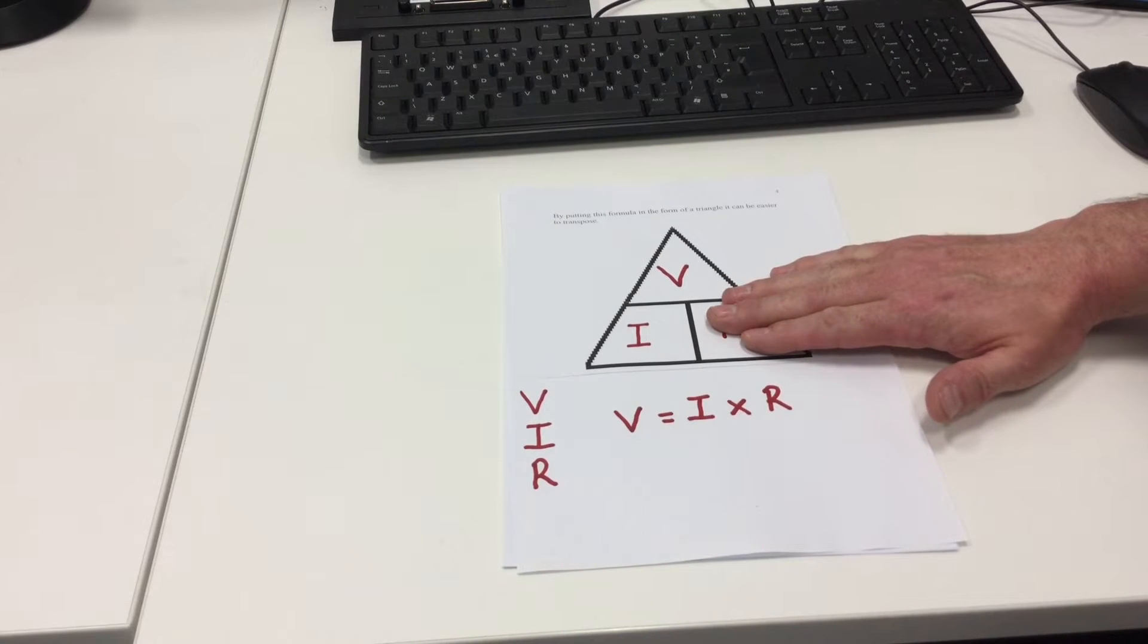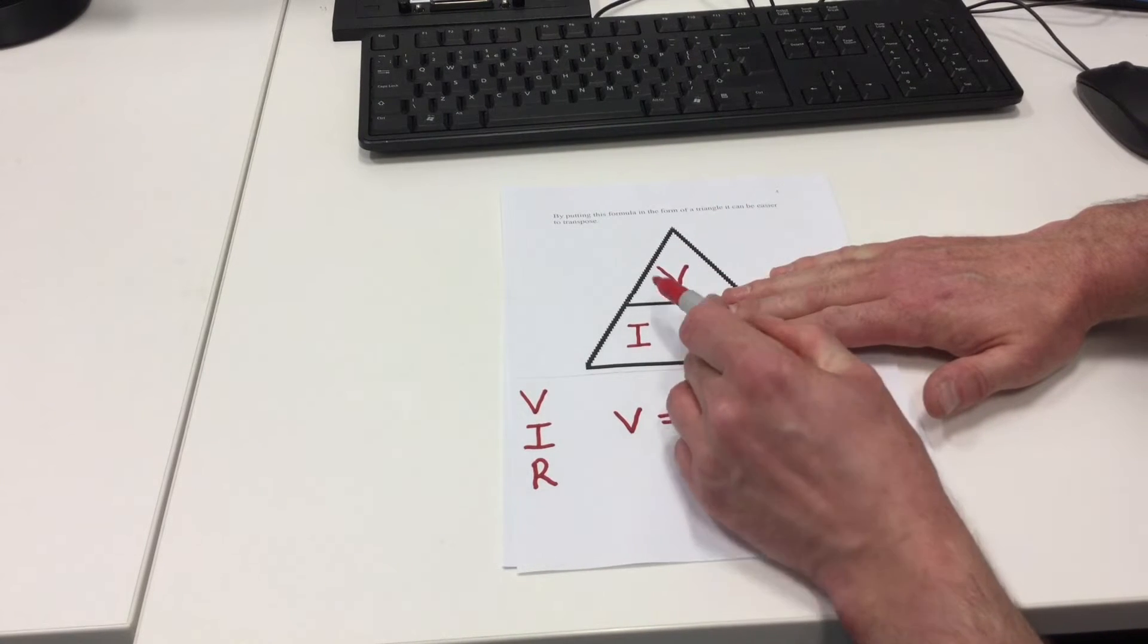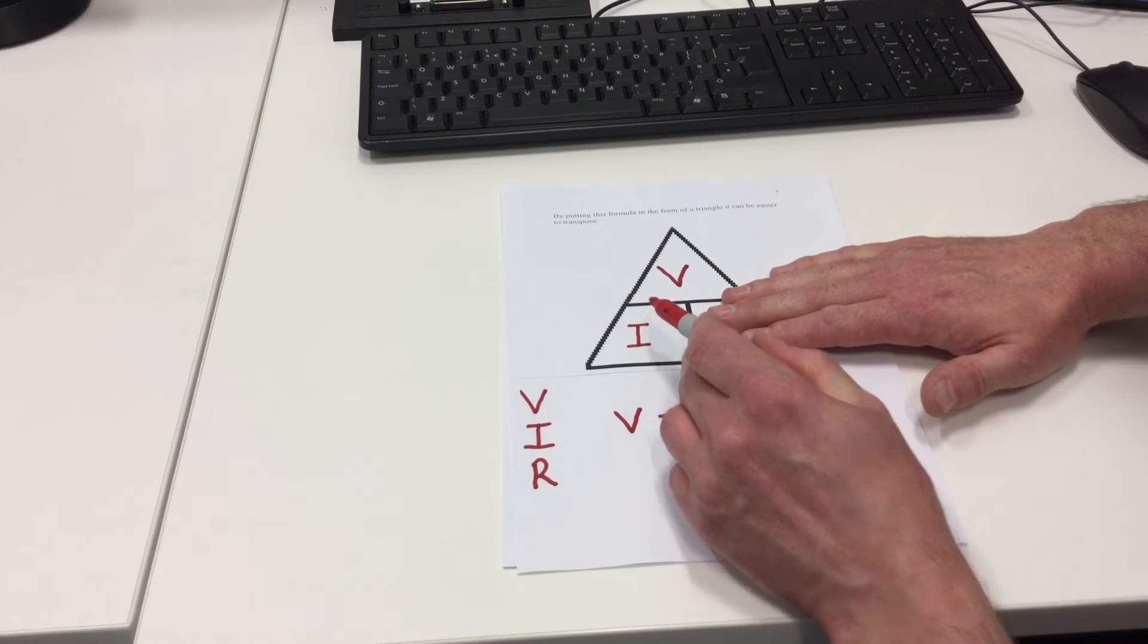If we cover over resistance, cover over the R, we're left with V divided by I or voltage divided by current.